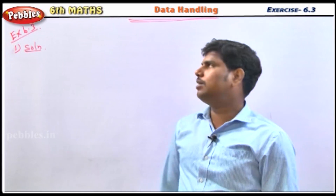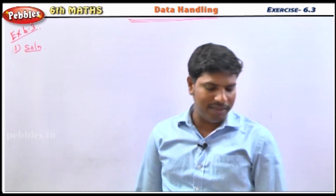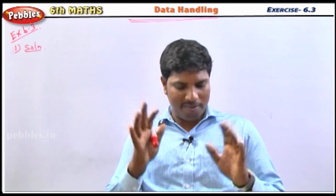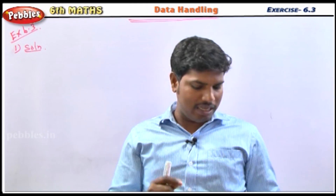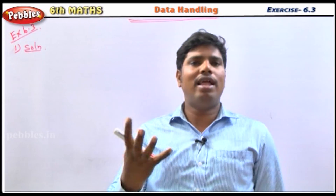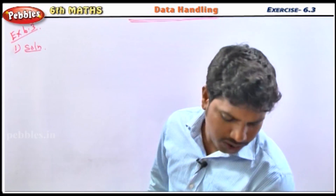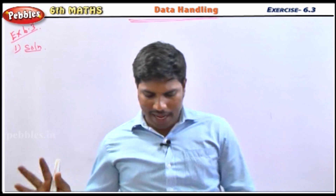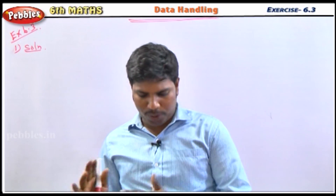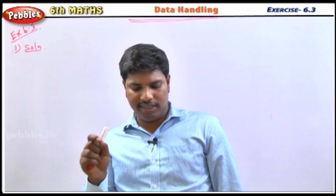Next part is XI 6.5. We will look at the bar diagram representing the number of shirts produced in a tailoring unit in 6 days.